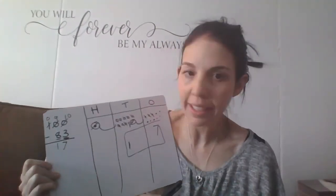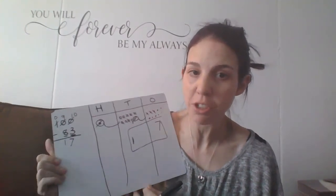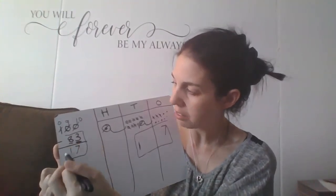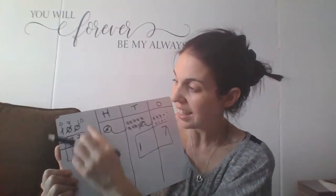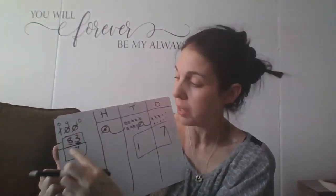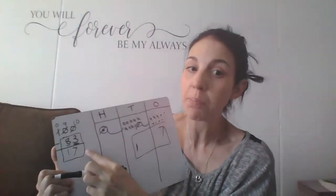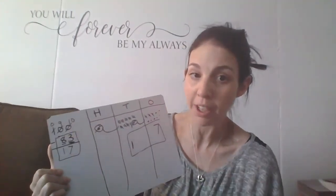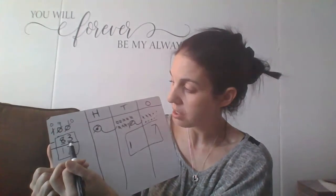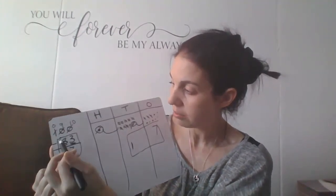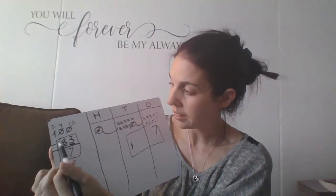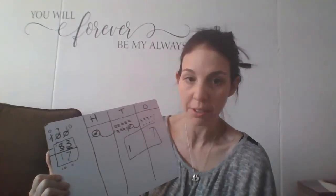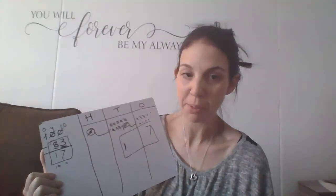If you're ever wondering how you can check if your answer is correct — when subtracting, 83 and 17 are the parts and they equal the whole, which is 100. So if those two parts add up to equal 100, then you found your correct answer. 7 plus 3 equals 10, carry the 1, then 8 plus 9 plus 1 equals 100. So yes, my answer checks out — that's just how you can double-check your work.